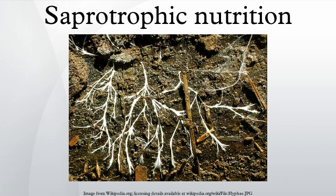Various word roots relating to decayed matter, eating and nutrition, and plants or life forms produce various terms, such as detritivore, detritophage, saprotroph, saprophyte, saprophage, and saprobe. Their meanings overlap, although technical distinctions narrow the senses. For example, usage distinctions can be made based on macroscopic swallowing of detritus versus microscopic lysis of detritus.